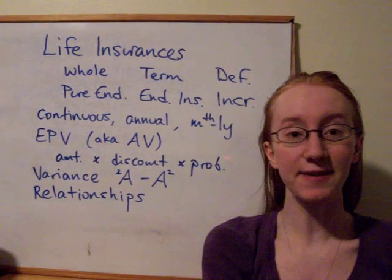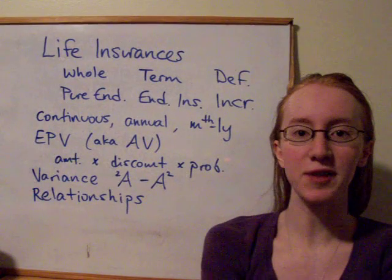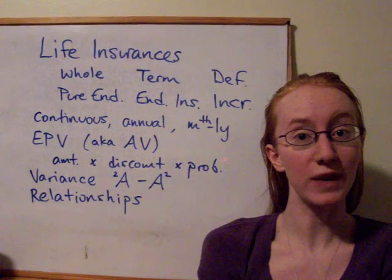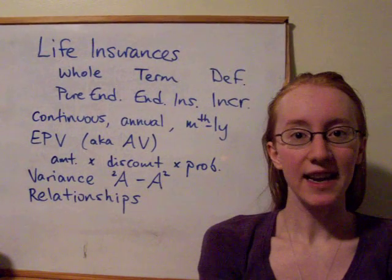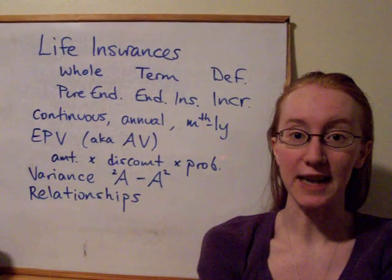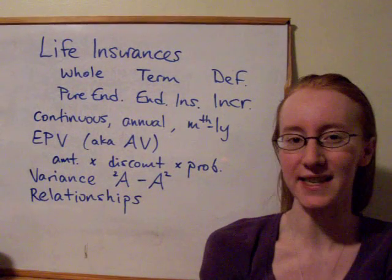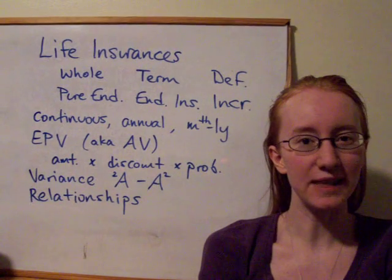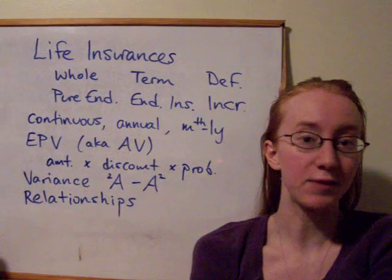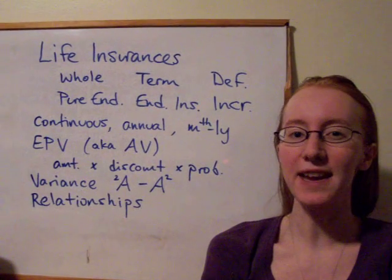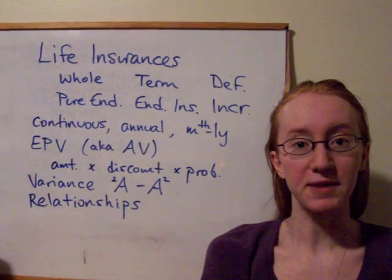There were six different kinds of insurances that we looked at in general. We have whole life insurance, which covers the person for their entire lifetime. Term life, which only covers up to N years. Pure endowment, which just pays out on survival to N years. Endowment insurance, which is a combination of term and a pure endowment — it pays out within N years if the person dies, or pays out if they make it to the end of N years. And then we had two special cases: we could have deferred any of these benefits — deferred whole life, deferred term, etc. — and we can also have increasing insurances, where the benefit actually goes up with the number of years survived.